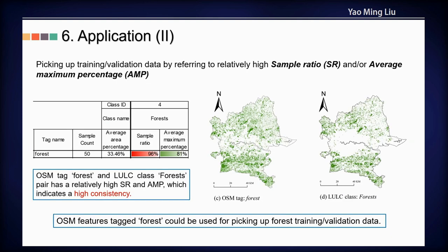The second application is picking up training data. For example, OSM tag 'forest' has a high sample ratio and average maximum percentage with the land use land cover class 'forests', which indicates high consistency. In this case, OSM objects tagged 'forest' could be used for picking up forest training data.